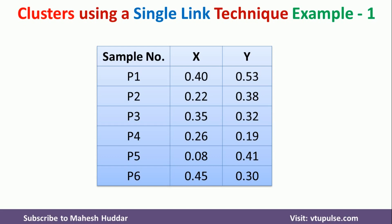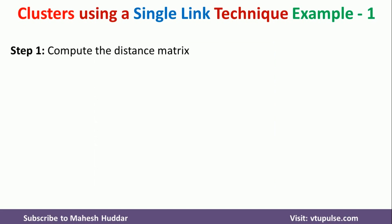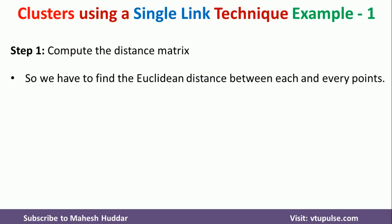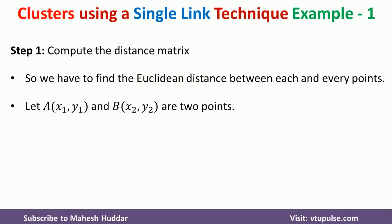In single-link technique, in the first step, we compute the distance matrix. To calculate the distance matrix, we need to find the distance between each and every point using Euclidean distance. Once we find the distance between each and every point, we find the minimum distance and then start forming the clusters.